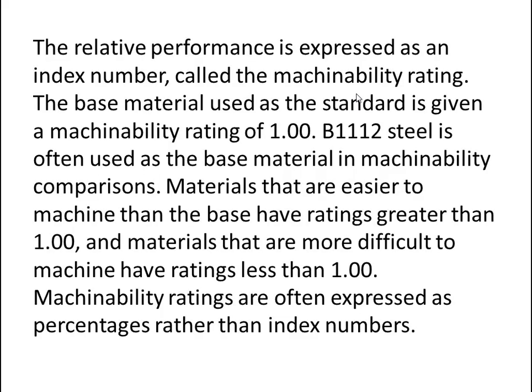The relative performance is expressed as an index number called the machinability rating. The base material used as a standard is given a machinability rating of 1. B1111 steel is often used as the base material in machinability comparisons. Materials that are easier to machine than the base have ratings greater than 1, and materials that are more difficult to machine have ratings less than 1. Machinability ratings are often expressed as percentages rather than index numbers.